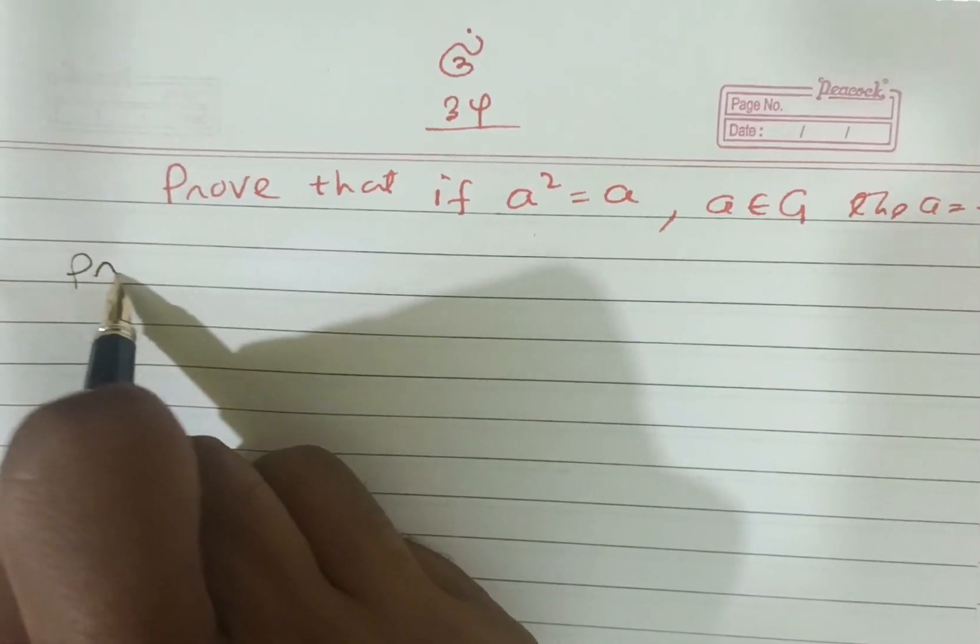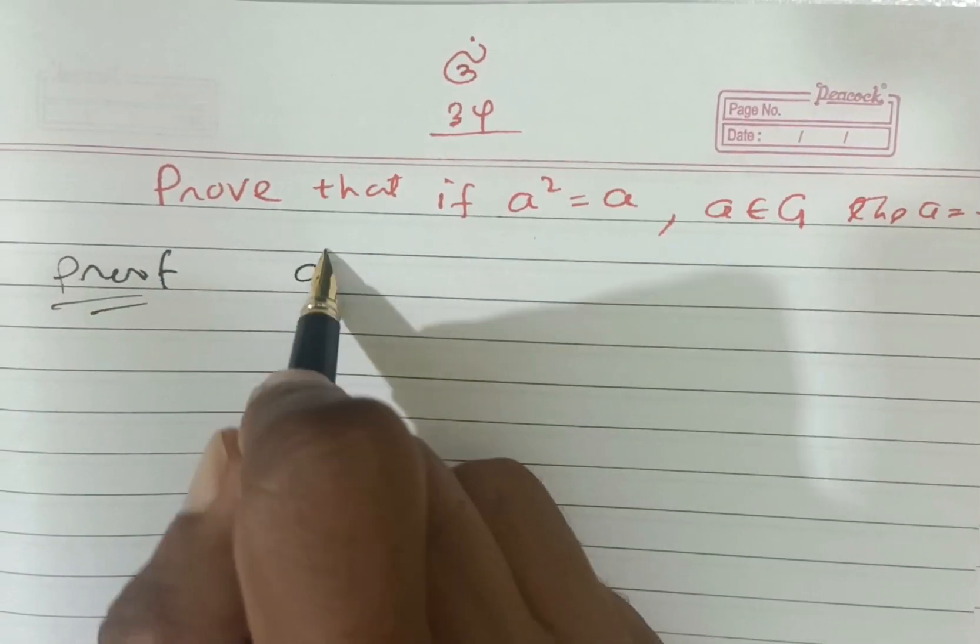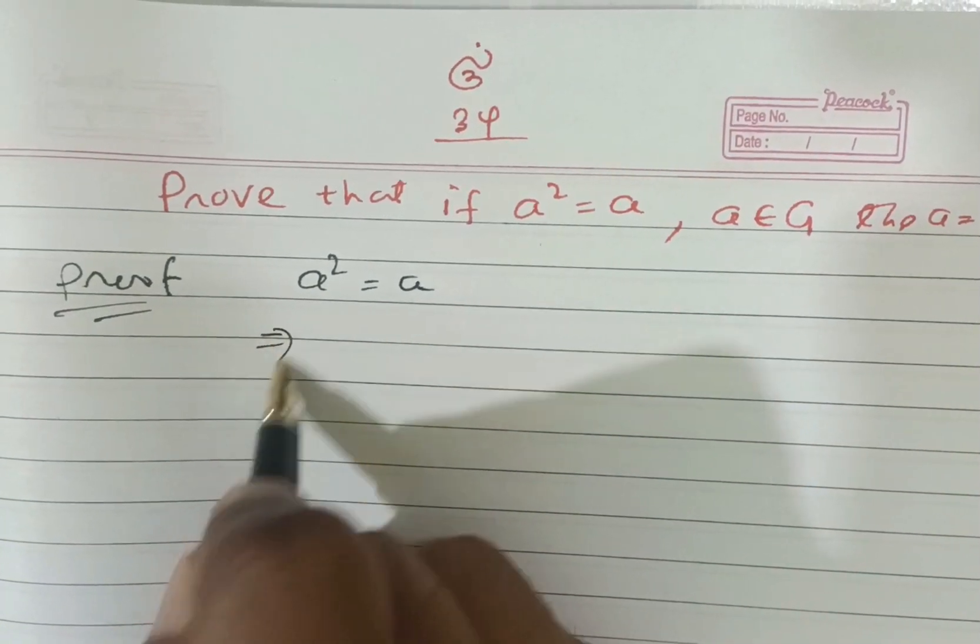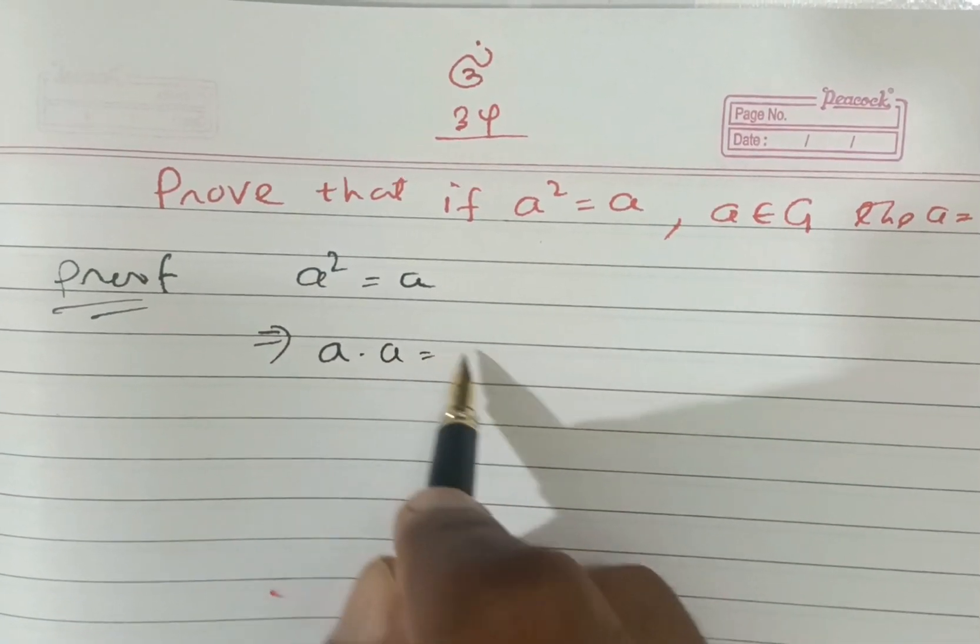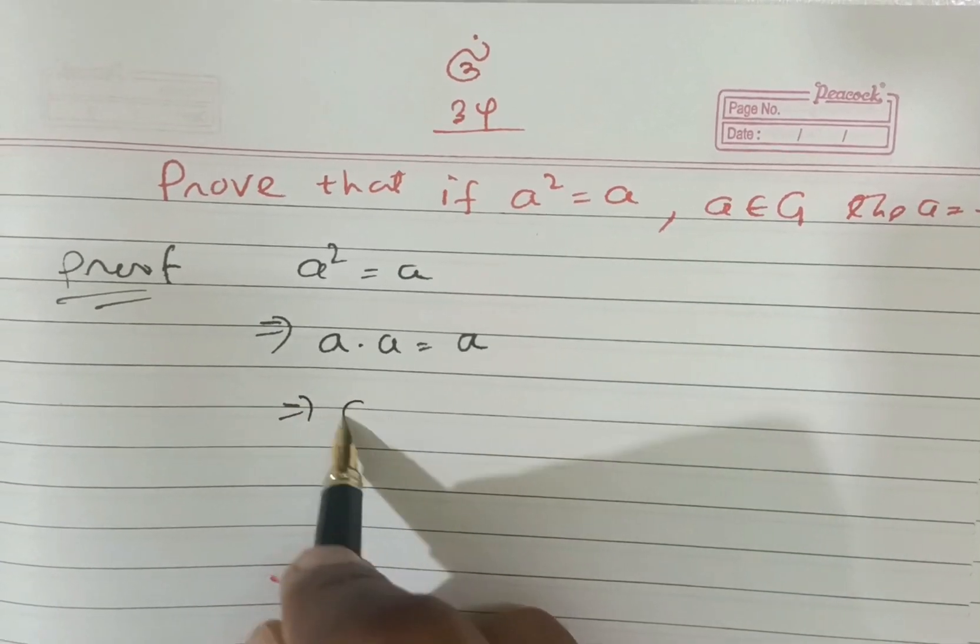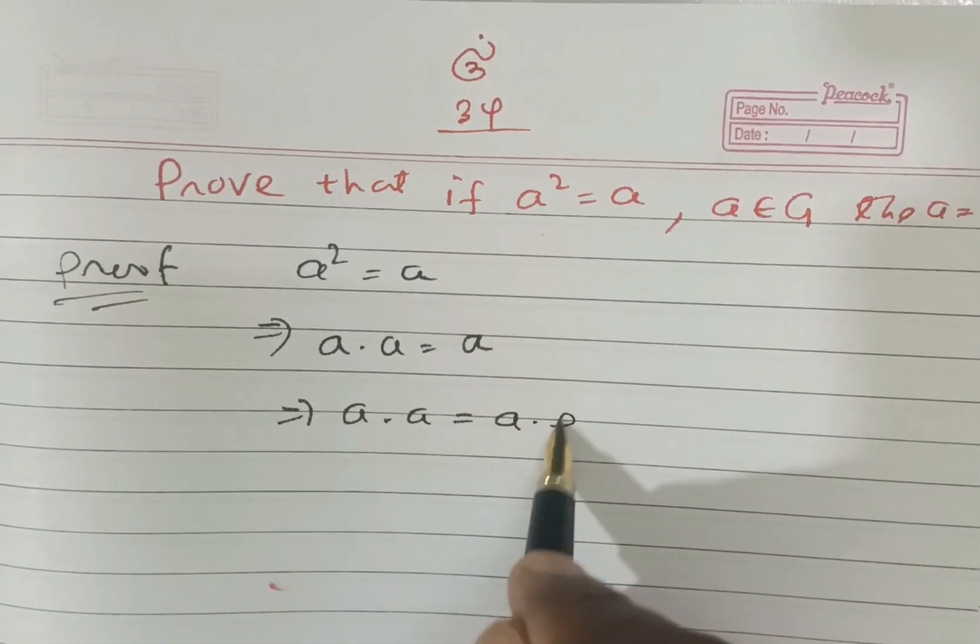Friends, it is given that a square is equal to a implies a dot a is equal to a or a dot a is equal to a dot e.